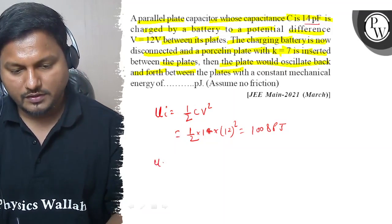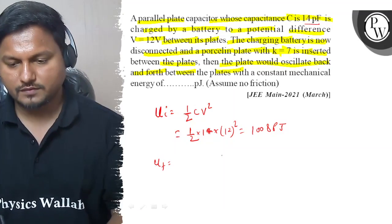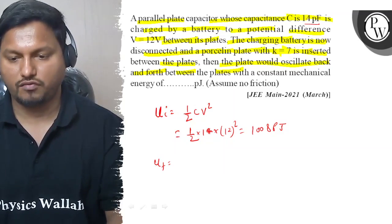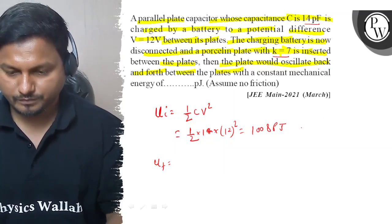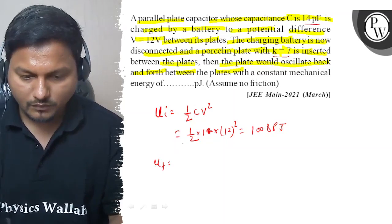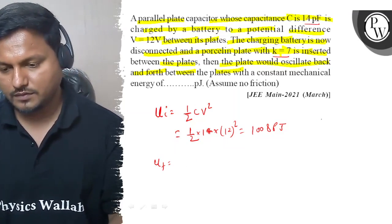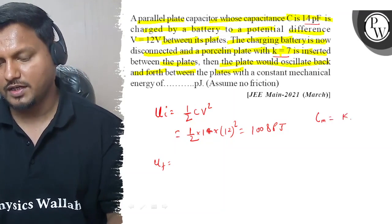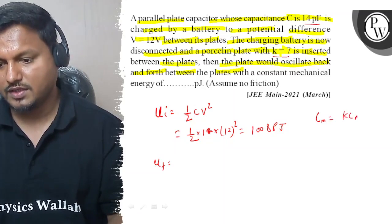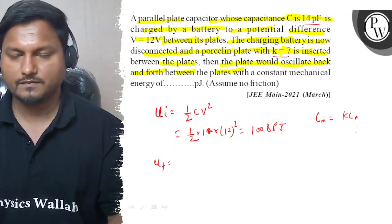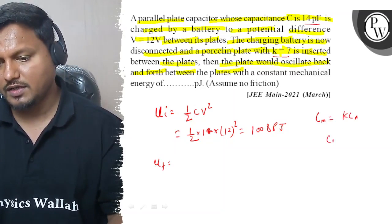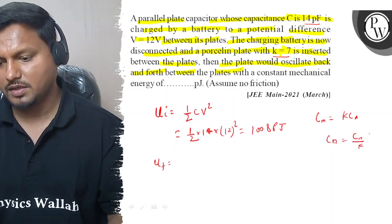Now U final — let's see how capacitance depends on the dielectric. C in medium equals k times C in air, so C in air equals C medium divided by k. Since the battery is disconnected, charge is constant, and energy U is proportional to capacitance when charge is constant — meaning U final equals k times U initial.